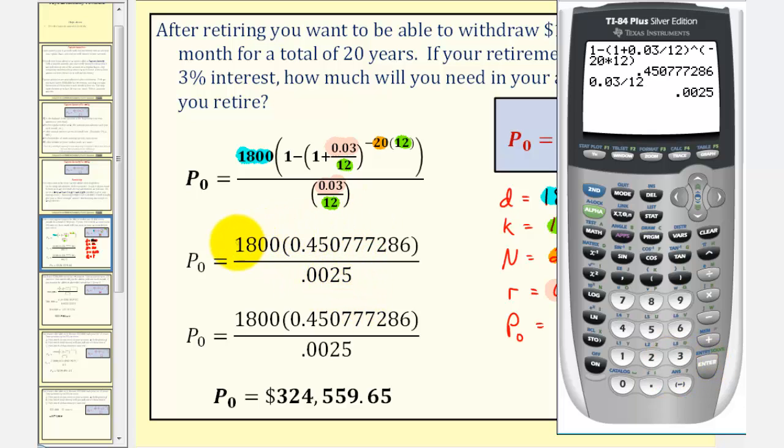Now we'll find the product of the numerator and then divide by the denominator. In the numerator we have 1,800 times 0.450777286, and we're going to divide this by 0.0025, which will give us P sub zero.